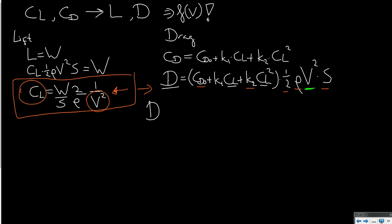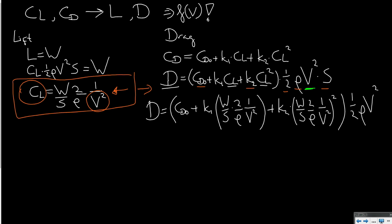If we do that, we can state that drag is still CD0 plus K1 times CL and that is weight over S, 2 over rho, and 1 over v squared, plus K2 times the same equation squared, and all of this has to be multiplied with half rho v squared S. It's starting to become quite a long and lengthy equation, but let's just see what it looks like and try to interpret what it means.